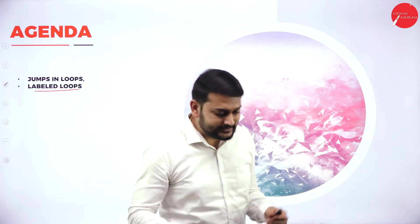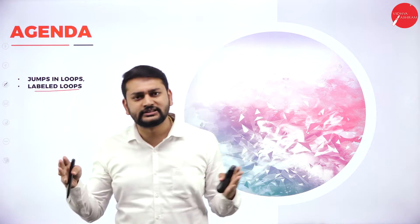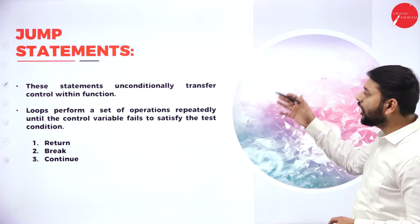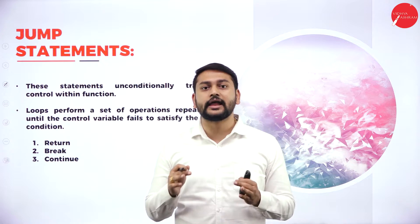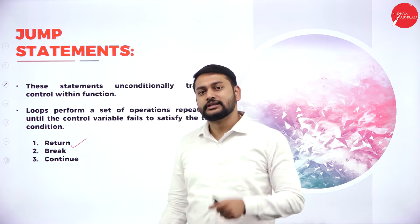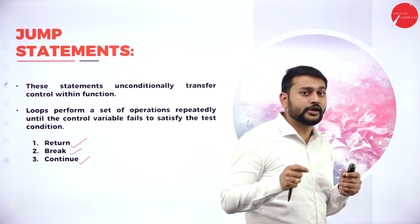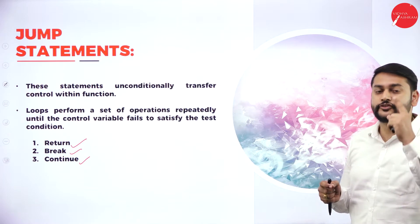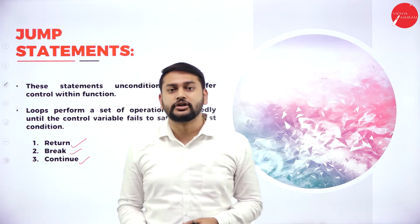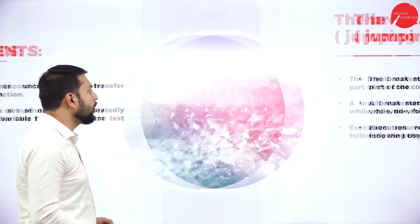What exactly is the meaning of jumps in loops? When it comes to the jump statement, I have three important things. The first one is return, the second one is break, and the last one is continue. This is very important to understand. Let's understand what exactly each statement is doing, one by one.